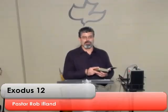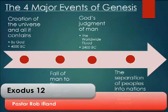So we're going to review these major biblical events that have got us to this point. When we went through Genesis, there were four major events and four major people. The first major event is the creation of the universe and all it contains, and God did that in 4000 BC, about 6,000 years ago.